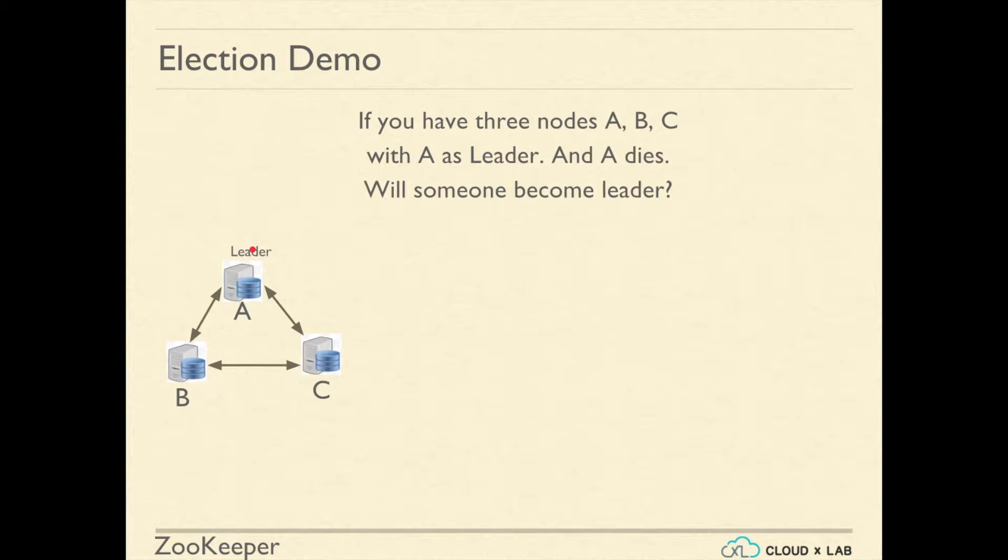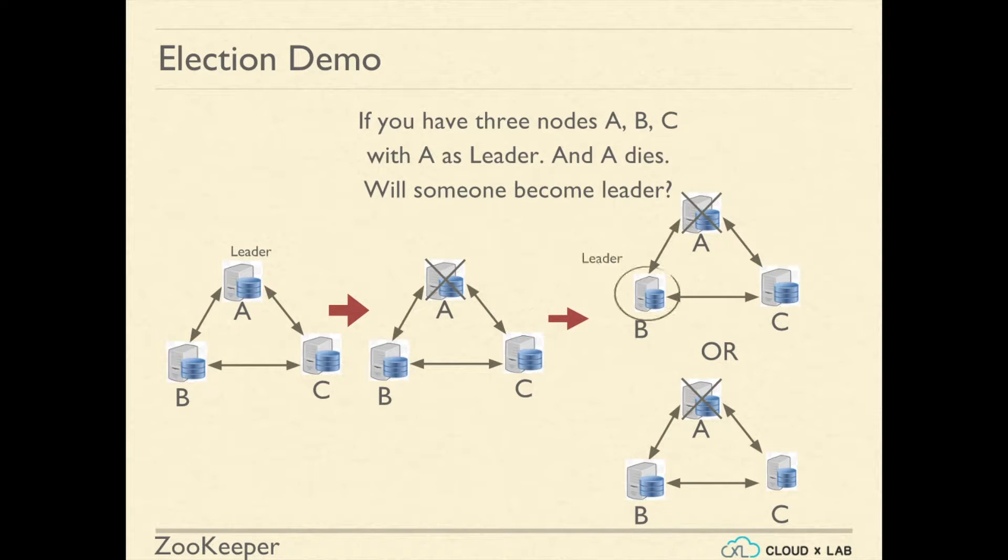If you have three nodes A, B, and C with A being the leader and A dies, will someone become the leader? Either B or C will become the leader.